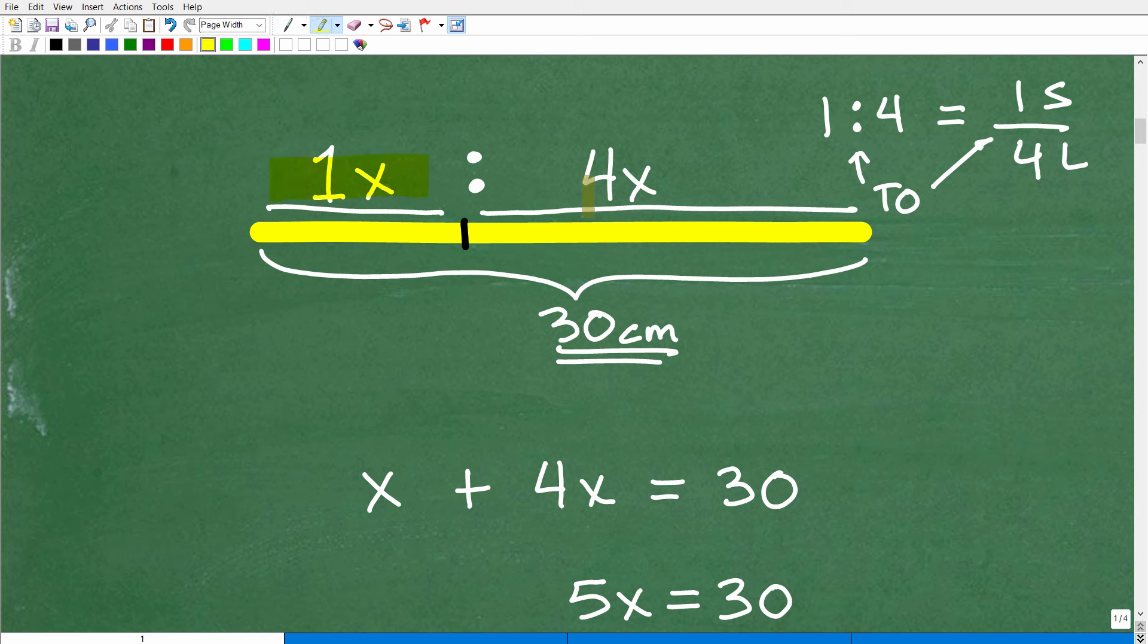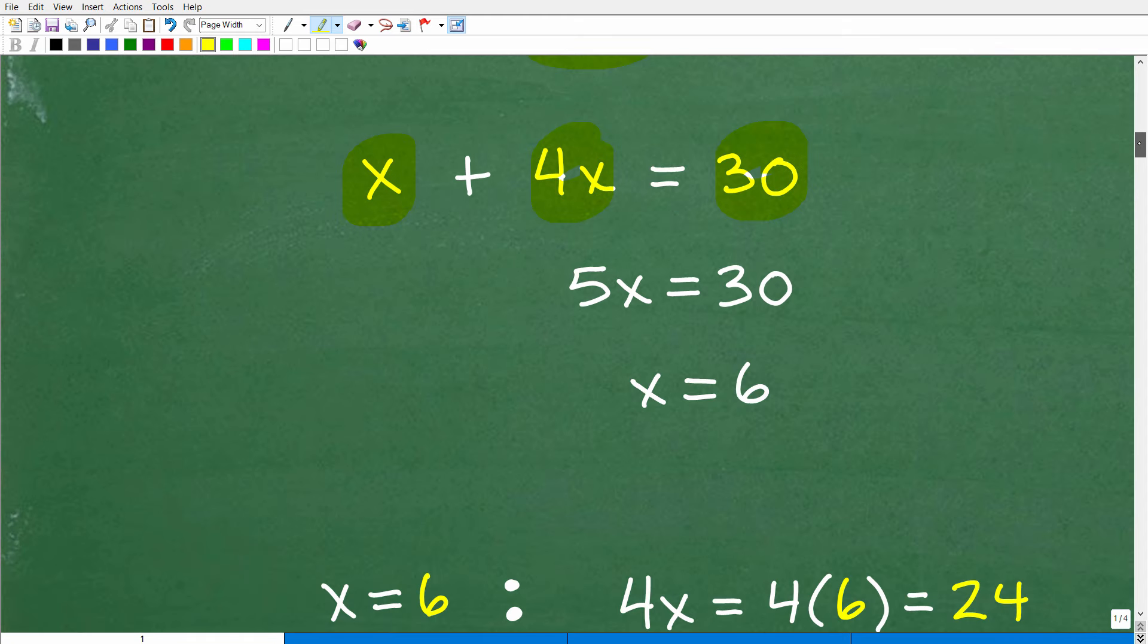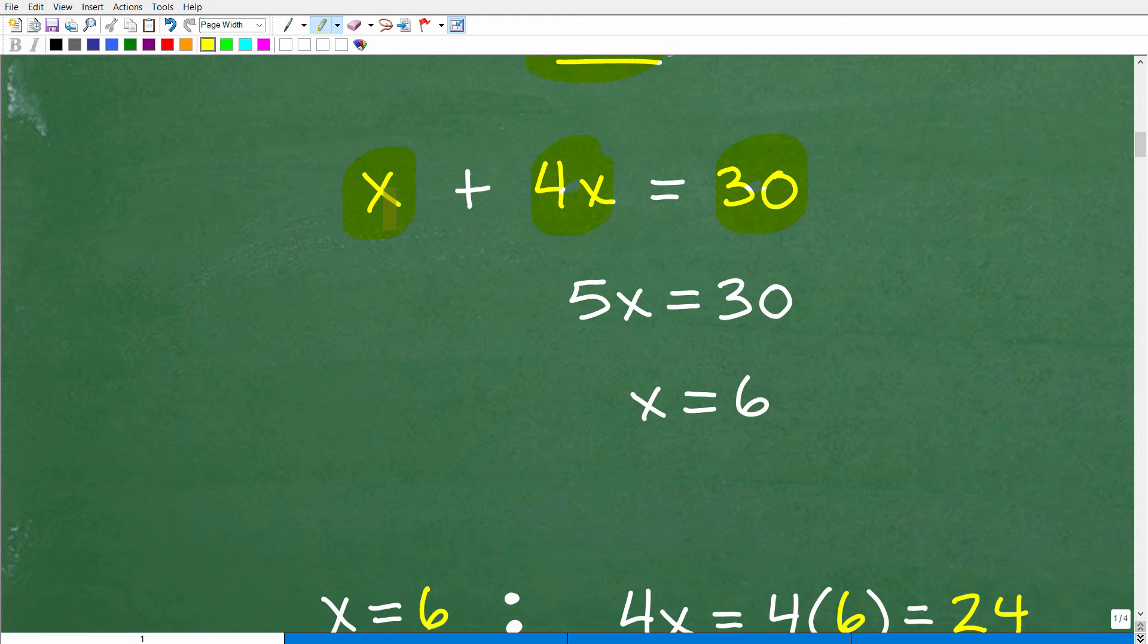Okay, so here we have the small length. Here we have the longer length. We know the total length, though, is 30. So we can write ourselves a lovely Algebraic equation. So we have x, this length here, plus 4x is equal to the total length of this stick, which is 30 centimeters. So we can go ahead and solve this basic equation. So x plus 4x is 5x. 5x is equal to 30. How do we solve for x? Well, I simply divide both sides of the equation by 5. I get x is equal to 6.